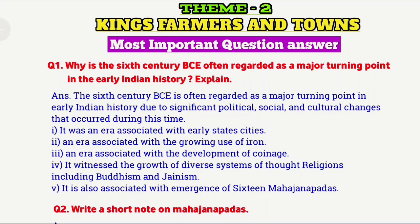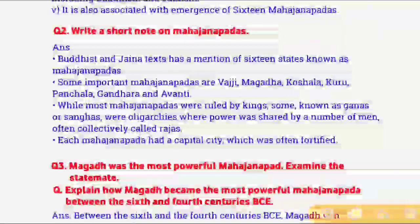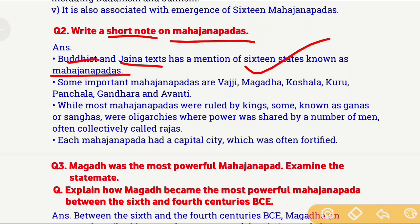Now we move to the second question: Write a short note on Mahajanapadas. The first point is that Buddhist and Jaina texts mention that in our Indian subcontinent, 16 states emerged, and all those 16 states were called Mahajanapadas. Among these 16 Mahajanapadas, some were very important, such as Vajji, Magadha, Koshala, Kuru, Panchal, Gandhara, and Avanti.